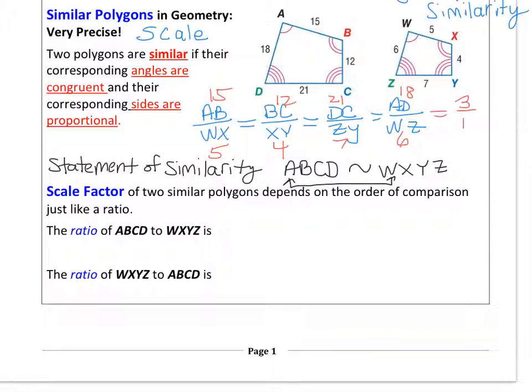So for example, the ratio of ABCD to WXYZ in our example above, I could read that to say the scale factor. So I could replace ratio with the scale factor and use them interchangeably, but in this case, ABCD came first in the sentence. And as we discussed when we were talking about ratios, that means that that's the numerator. And the second in the comparison will be the denominator. So the scale factor or the ratio of ABCD to WXYZ is going to be 3 to 1. And if I turn that sentence around and I say the ratio or the scale factor of WXYZ to ABCD, well, that would be 1 to 3.